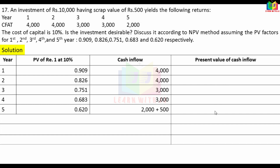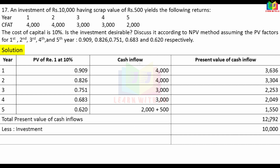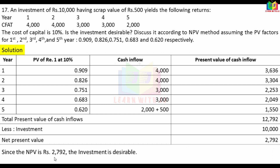Present value of cash inflow: 4000 × 0.909, 4000 × 0.826, 3000 × 0.751, 3000 × 0.683, 2500 × 0.620. Total present value of cash inflow is calculated. Cash outflow is 10,000. NPV (net present value) is 2,792. Since NPV is positive at 2,792, the investment is desirable.